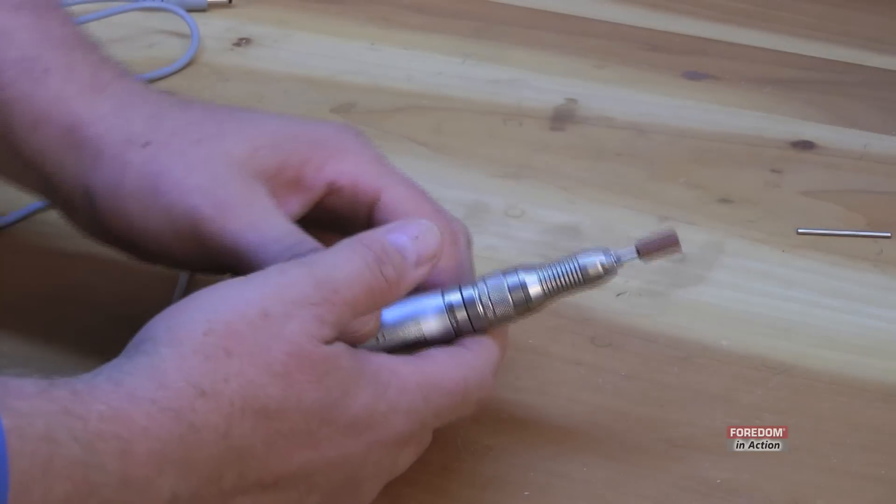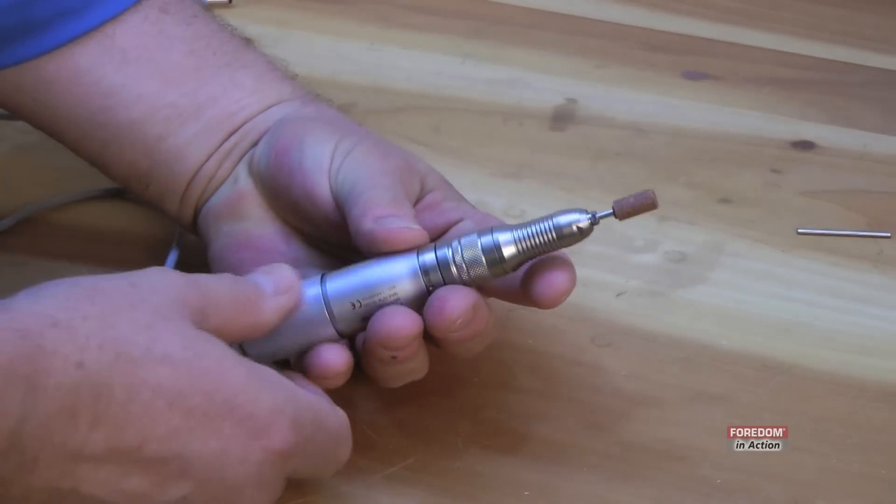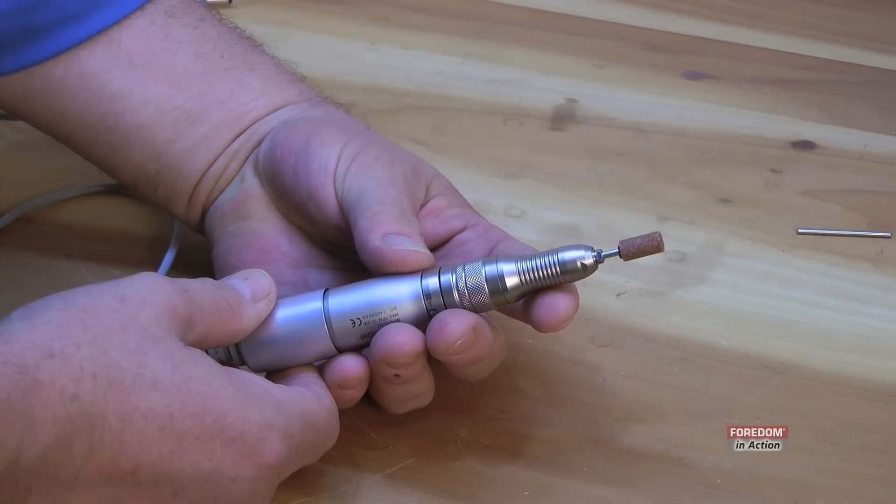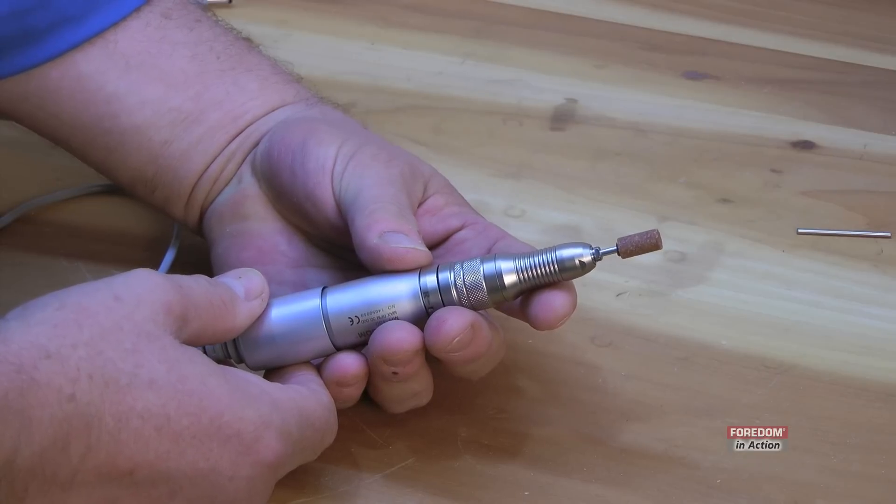This particular handpiece can take a 3/32nd collet such as the 1030 model or come with a 1/8 inch collet. I always recommend that somebody get a 1/8 inch collet and then go with a collet reducing sleeve so you never have to change the collet.